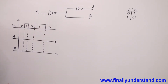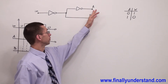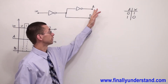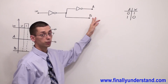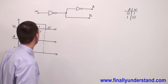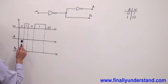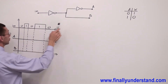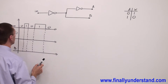We have to determine the waveform which is going to appear at point A and the waveform which is going to appear at point B. Let me start with the waveform at point A first.